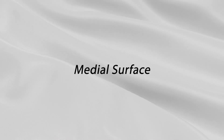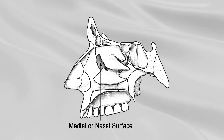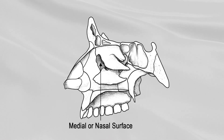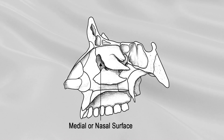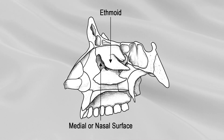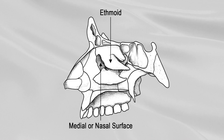MEDIAL SURFACE. The medial or nasal surface forms part of the middle meatus of the nose. Posteriorly, it articulates with the ethmoid and completes some of the anterior ethmoidal cells.